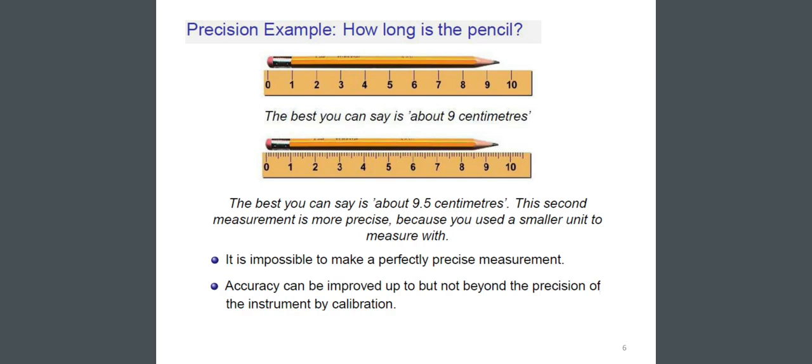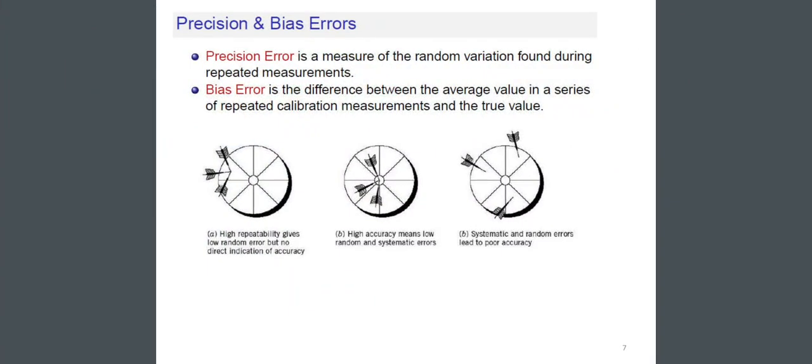Accuracy can be improved up to, but not beyond, the precision of the instrument by calibration. Precision and Bias Errors: Precision error is the measure of the random variation found during repeated measurements. Bias error is the difference between the average value in a series of repeated calibration measurements and the true value.